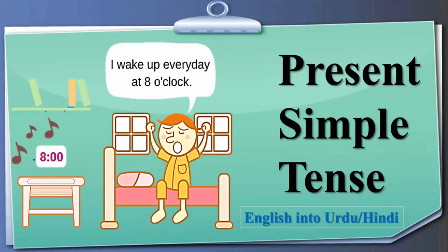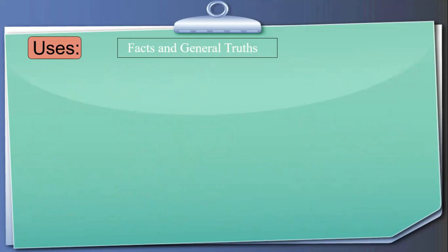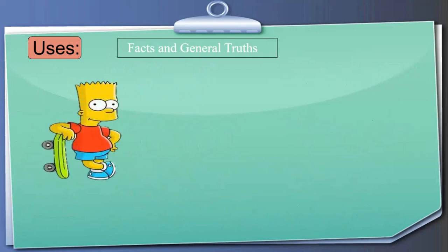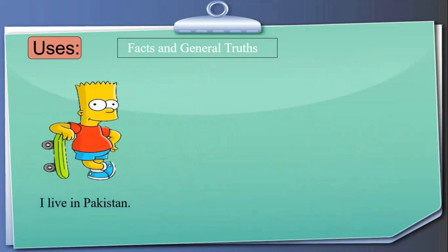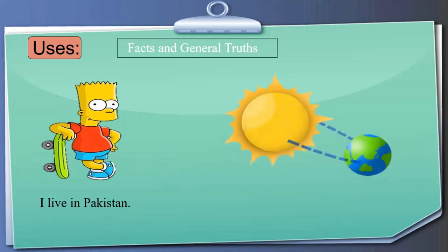Present simple tense is used for facts and general truths. For example, a man says 'I live in Pakistan' — this is a general truth about himself. Another example: 'The earth goes around the sun' — this is a fact, a general truth. When we talk about facts and general truths, we use present simple tense.